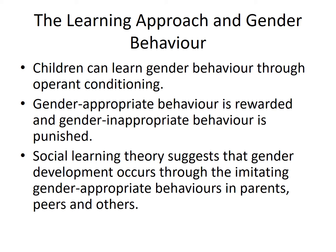For example, girls may be encouraged to play with dolls and boys with cars. If a boy plays with a doll, his father may ridicule him for it. Social learning theory can also be used to explain gender development. Social learning theory is learning through observing models, so children may learn gender behaviour through imitating gender appropriate behaviours in parents, peers and others. For example, a girl may observe her older sister baking a cake, see that her sister is praised for it, and want to copy that gender appropriate behaviour herself.